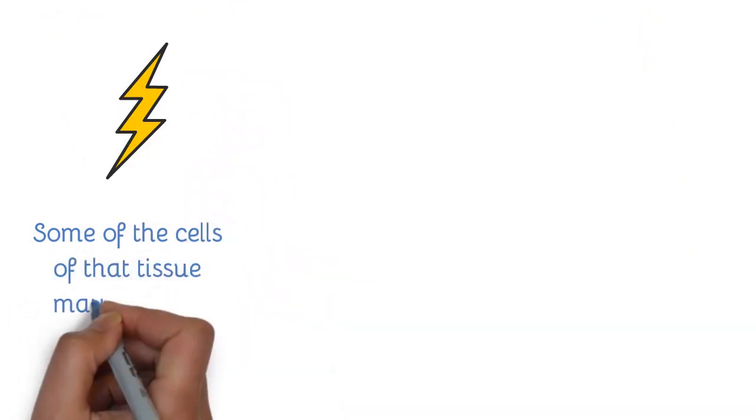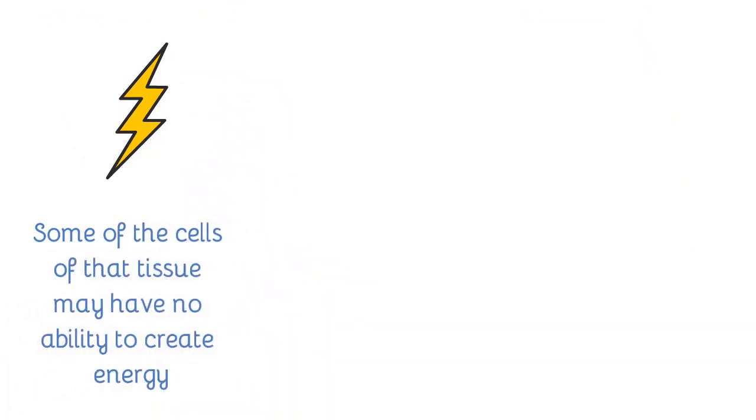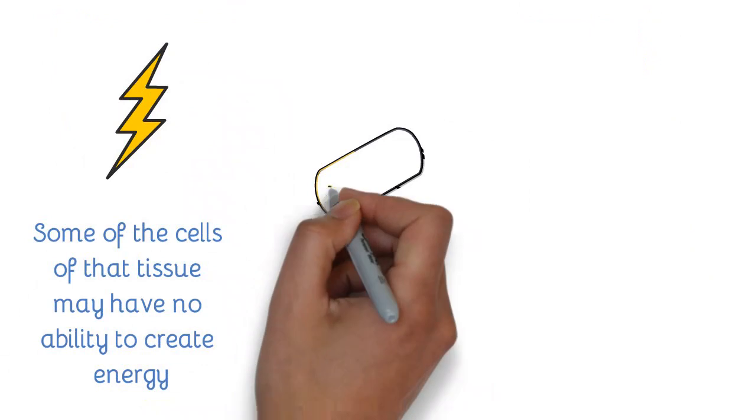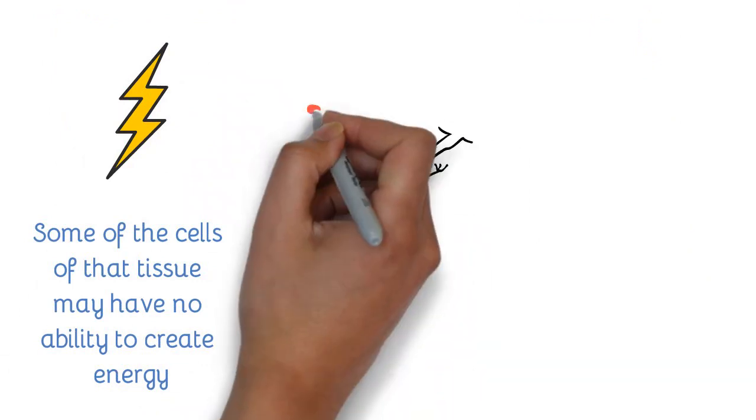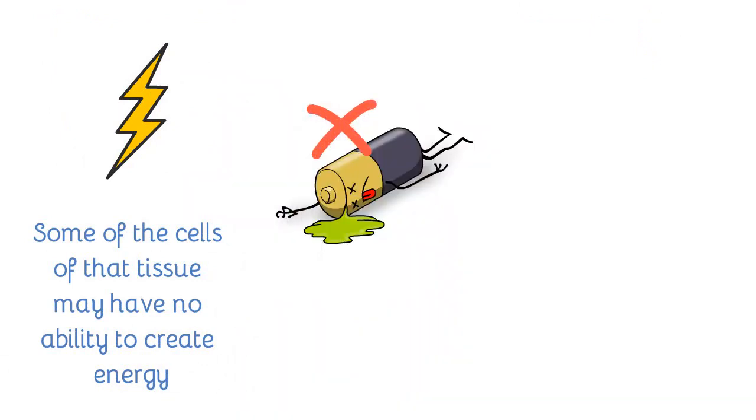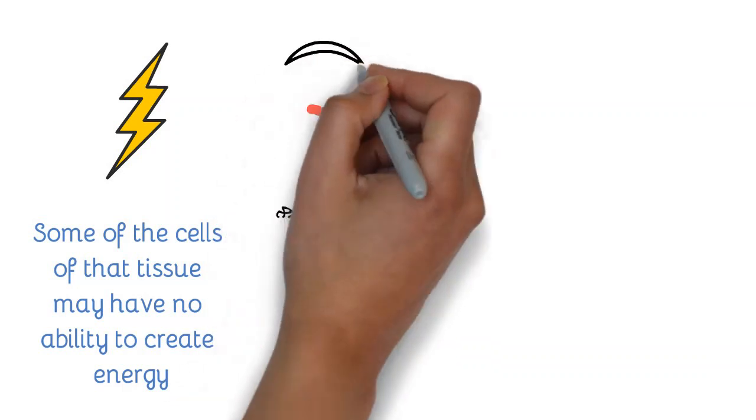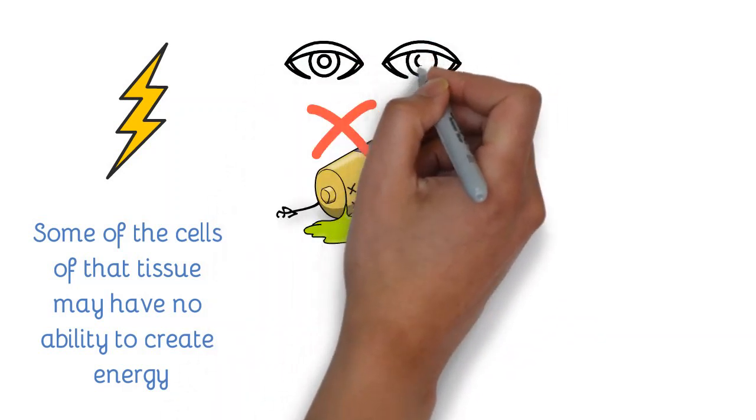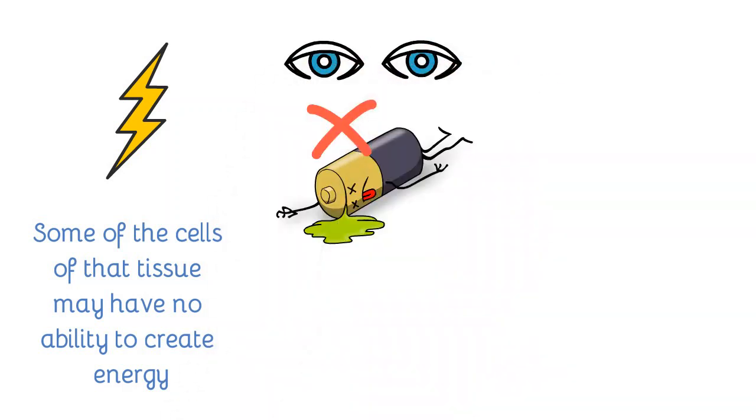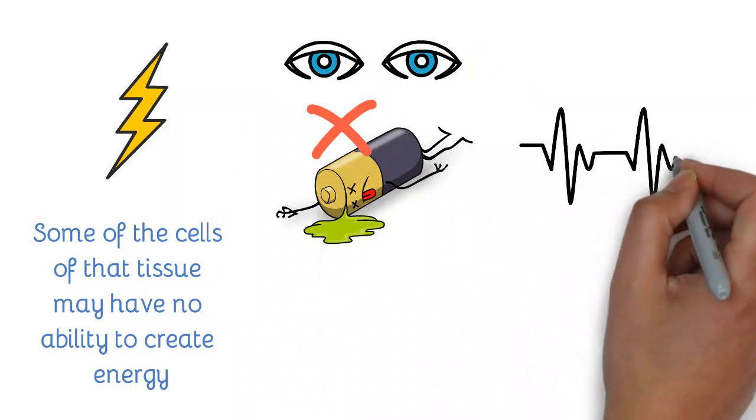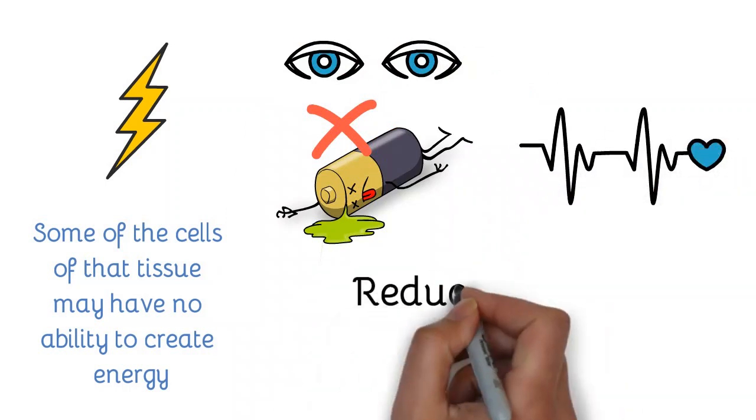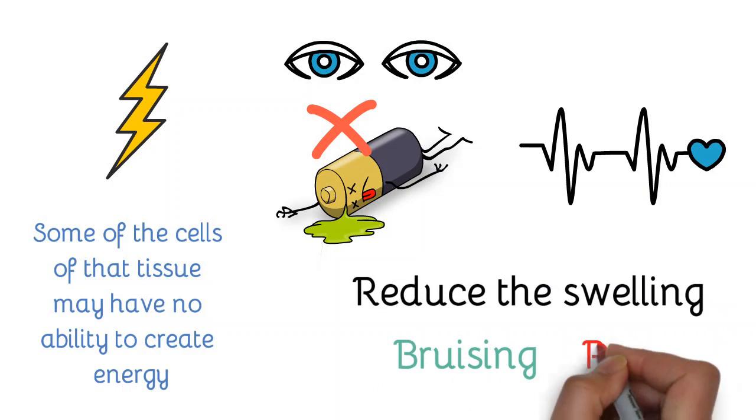Some of the cells of that tissue may have no ability to create energy. They're dead or almost dead. But you're relying on the cells that are not dead to pick up the job. They wake up, they become more alert, and they begin to shift and change the tissue to begin the healing process. You reduce the swelling, the bruising, the pain. You improve the circulation. All of these wonderful things happen to the extent the body can do it.